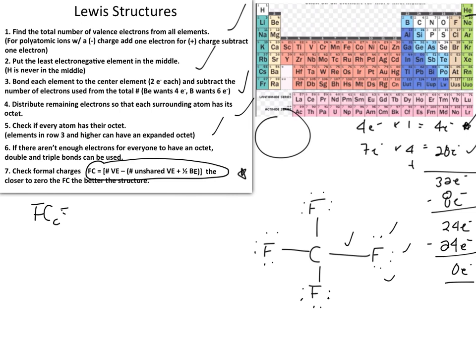Carbon only has bonded electrons — there are no lone pairs on the carbon atom. So the unshared valence electrons for carbon equals zero. Carbon has four bonds around it, and each bond contains two electrons.